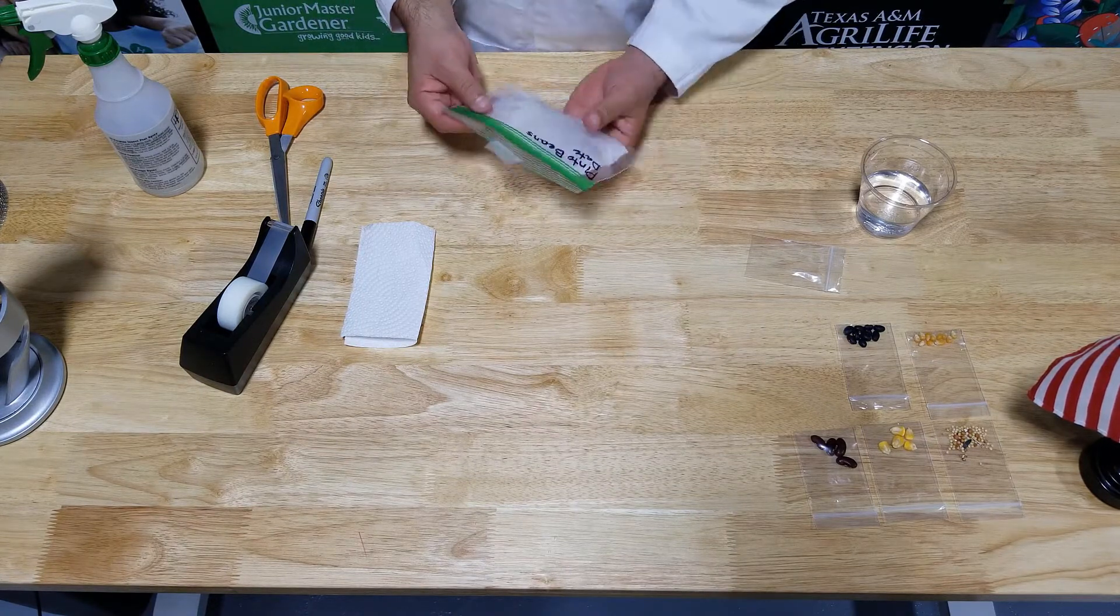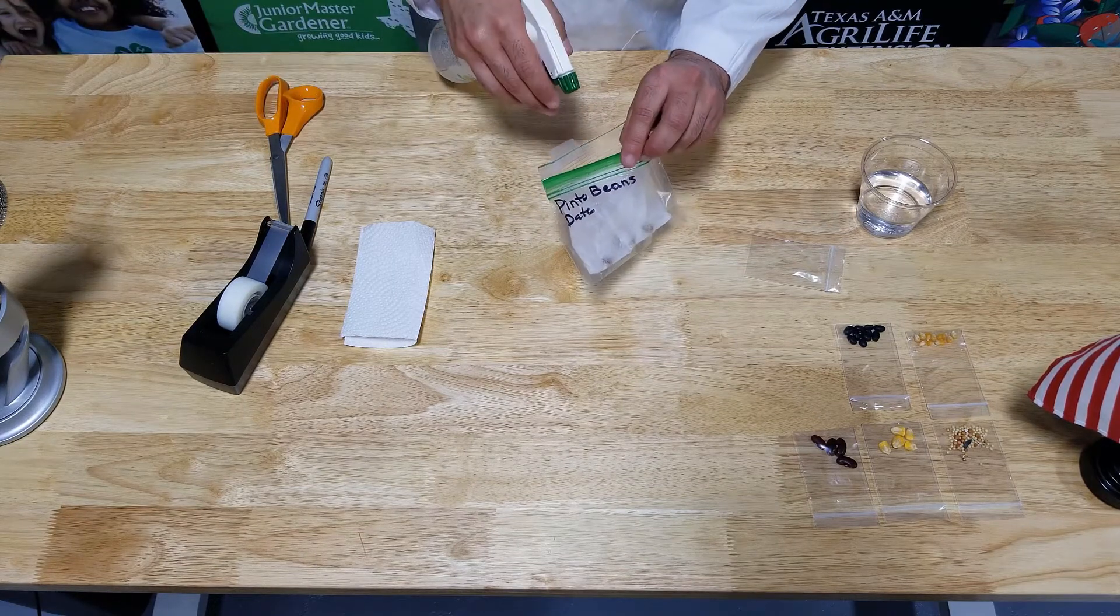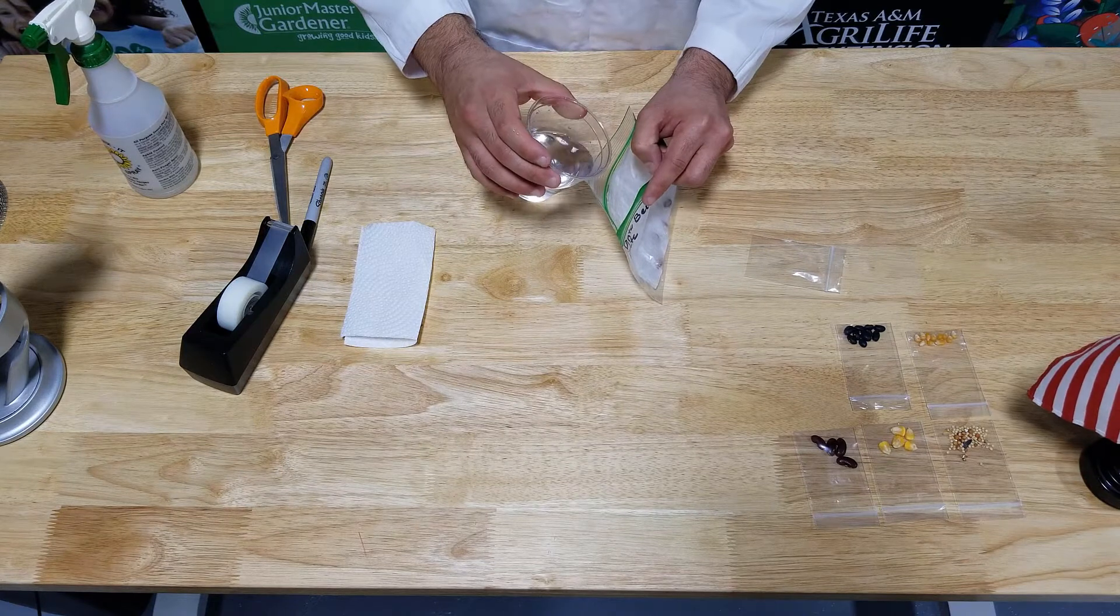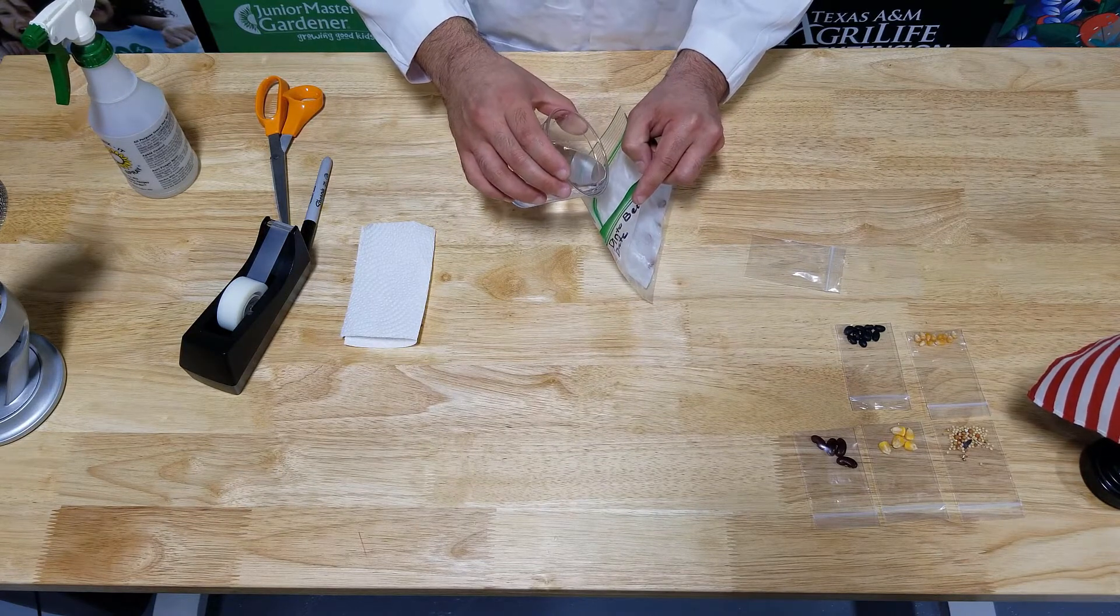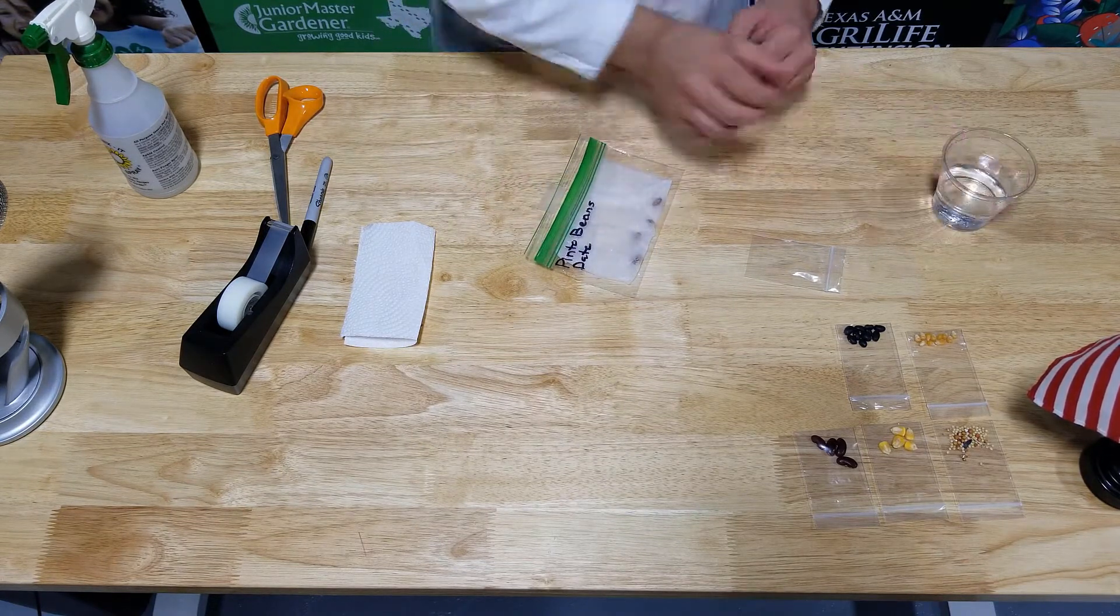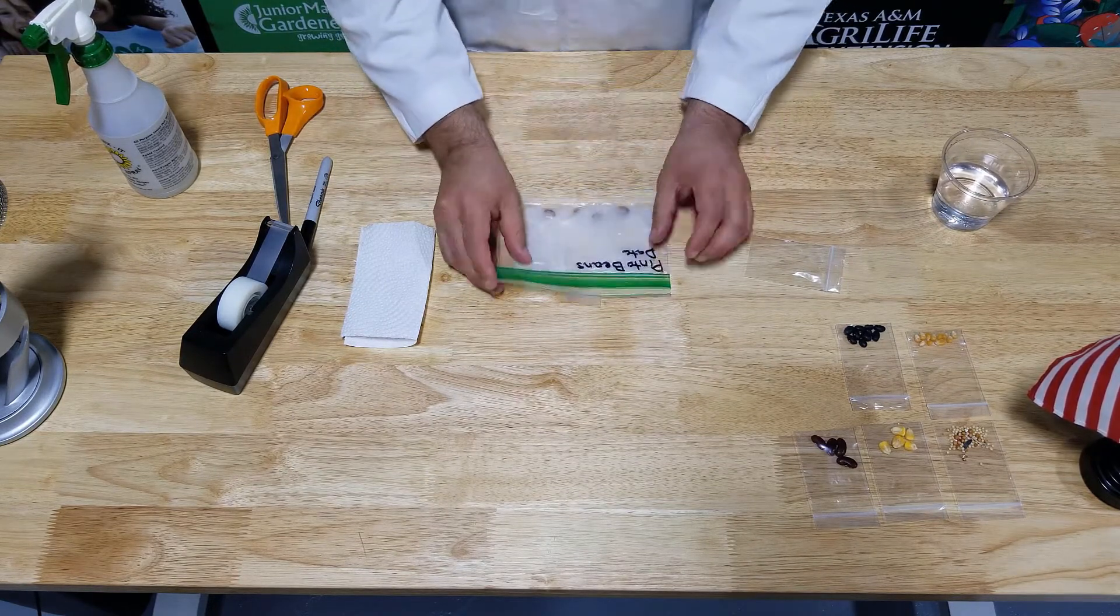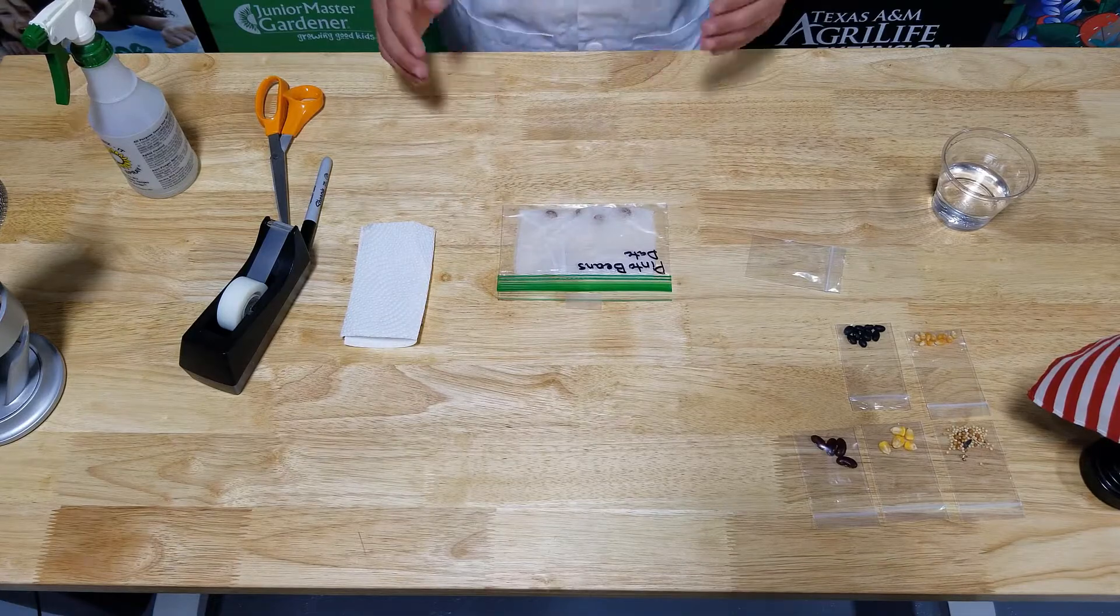If our paper towel begins to dry out, we can take our spray bottle, give it one spray. If not, we can take a little bit of water and we can add just a smidge of water. We don't want to add a lot, just to moisten it up just a little bit. Take it, close it three quarters of the way, put it back on our window. And that is how we're going to germinate seeds.